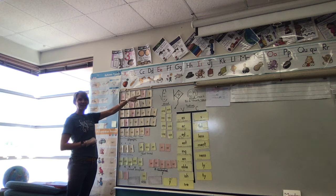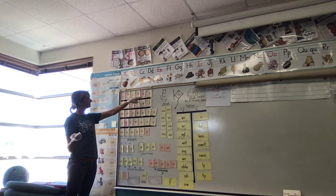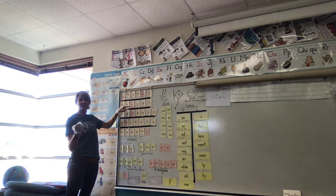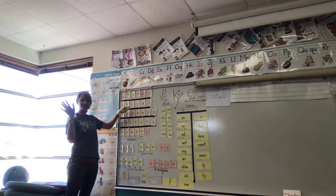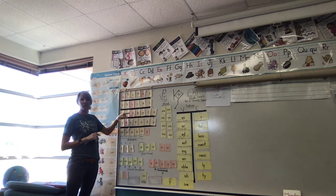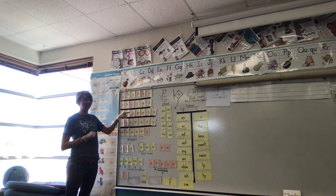Let's drill some sounds. Be my echo at home. A apple app, A safe a, A acorn a, Y cry I, Y baby e, U up uh, U mule u, U rule u, U pupil u, U flu u, E ed e, E Pete e, E me e, I itch it, I pine i, I hi i, O octopus o, O home o, O no o.